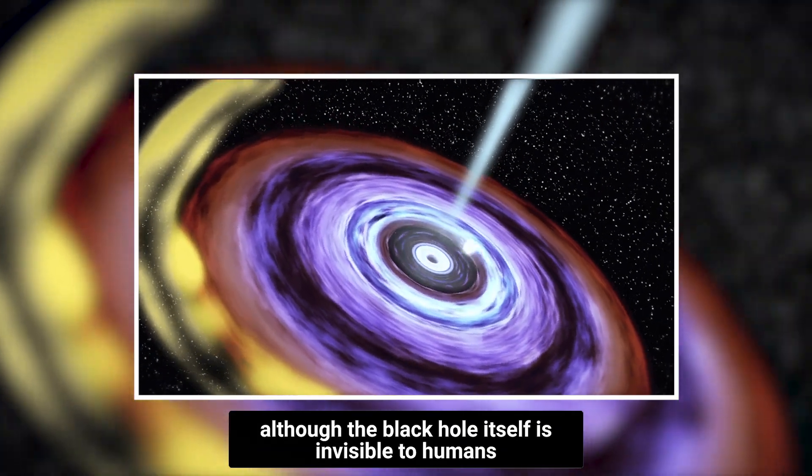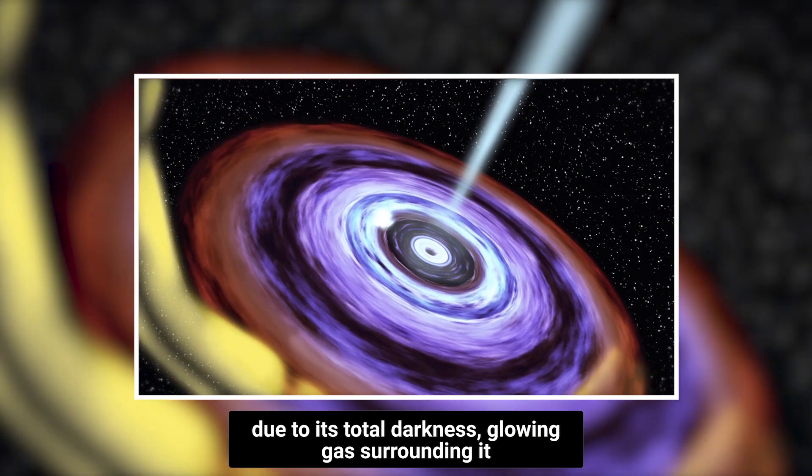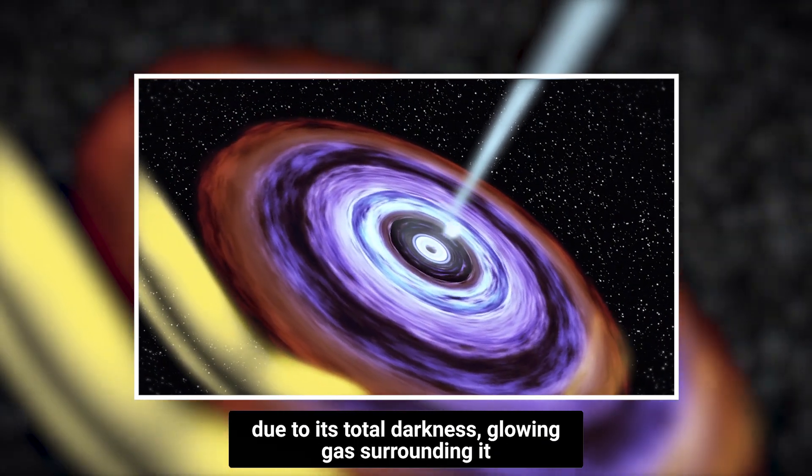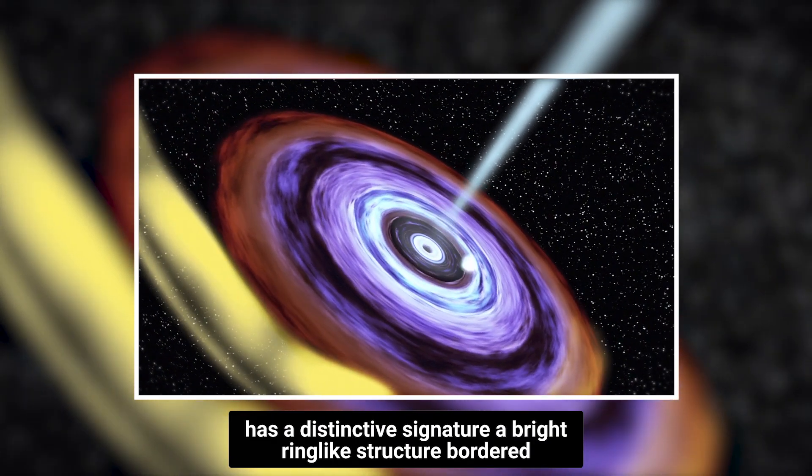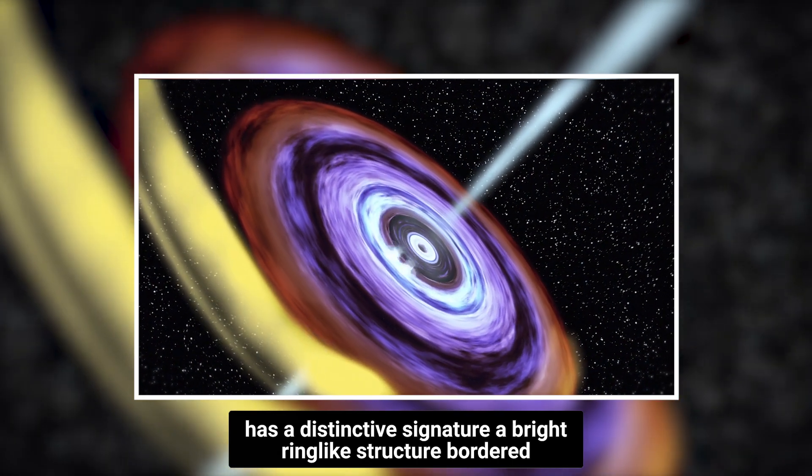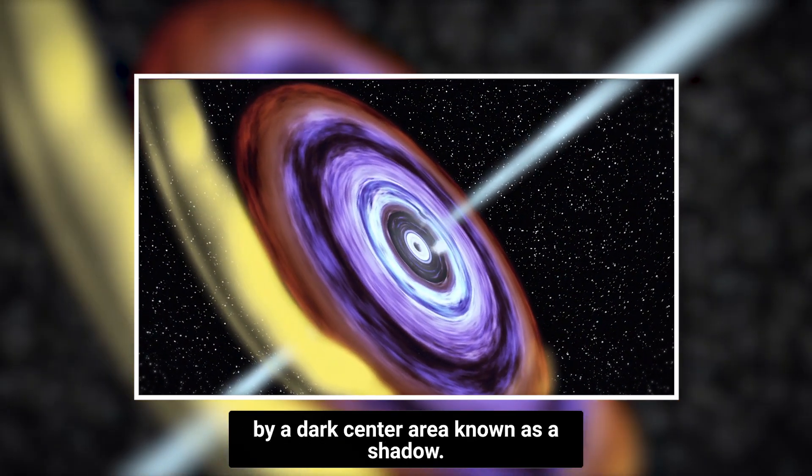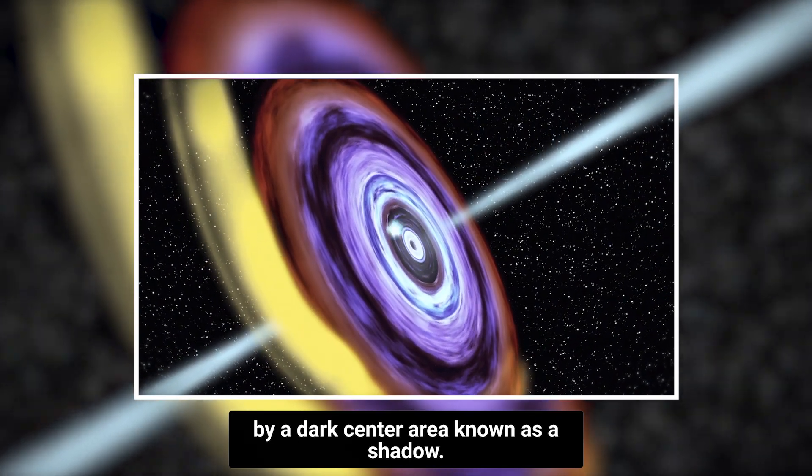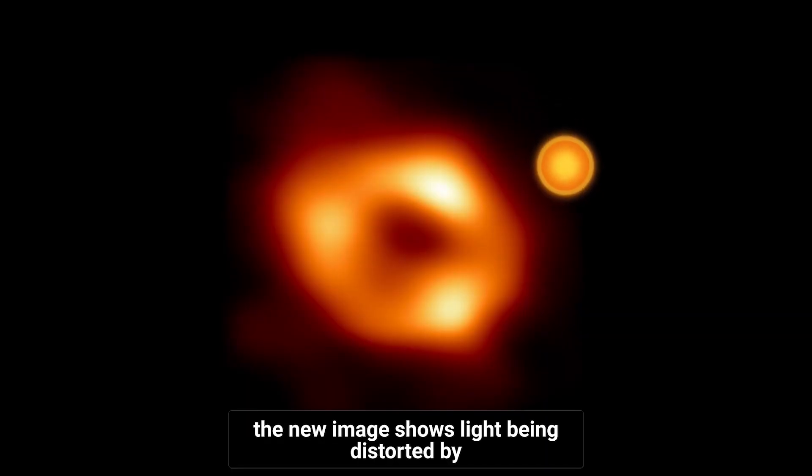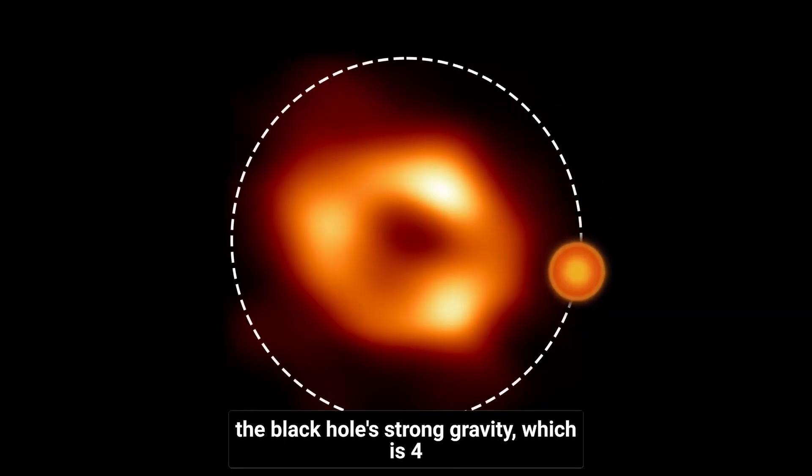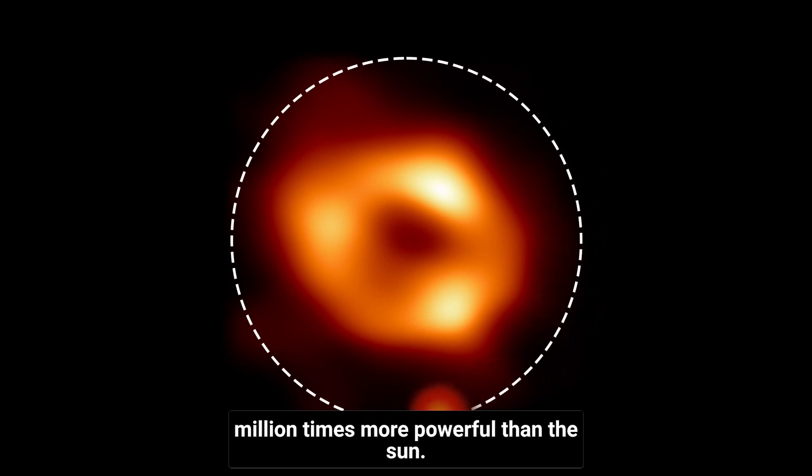Although the black hole itself is invisible to humans due to its total darkness, glowing gas surrounding it has a distinctive signature, a bright ring-like structure bordered by a dark center area known as a shadow. The new image shows light being distorted by the black hole's strong gravity, which is four million times more powerful than the Sun.